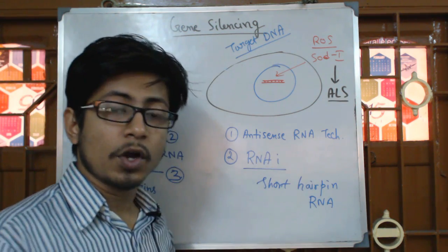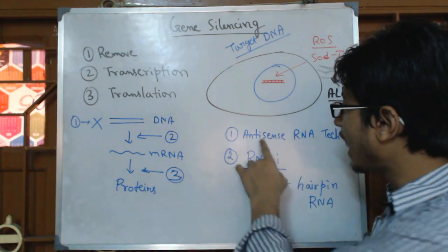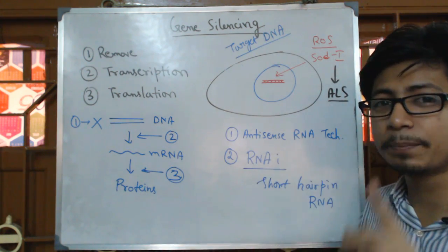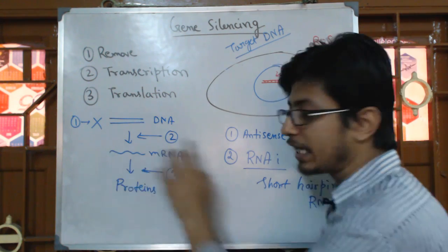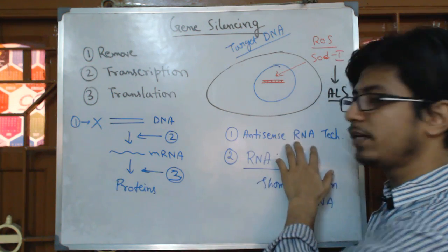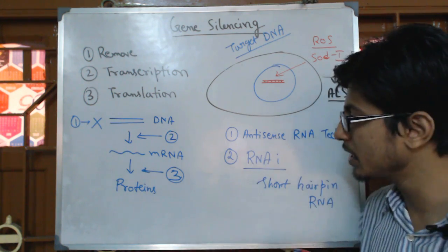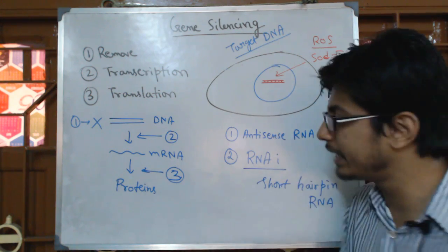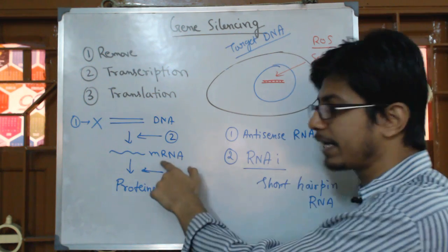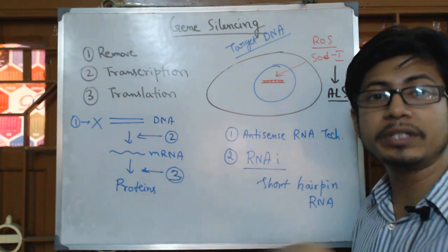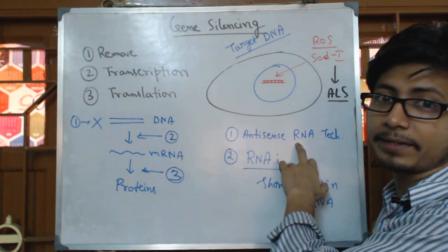Antisense RNA technology is another way of preventing the expression of a gene. This time, the prevention occurs at the translation level — that means we use a specific sequence of RNA, known as antisense RNA, to block and degrade mRNAs. So our target will be mRNA, and we will degrade it using antisense RNA.